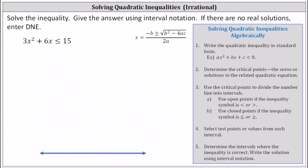Solve the given quadratic inequality and give the answer using interval notation. To begin, we need to write the quadratic inequality in standard form, which means we need to subtract 15 on both sides and write the inequality as 3x squared plus 6x minus 15 less than or equal to zero.